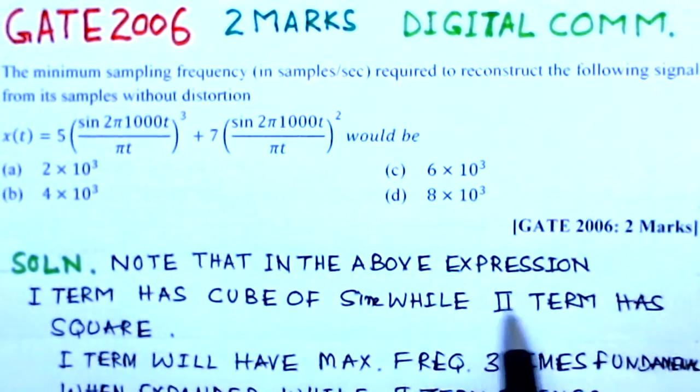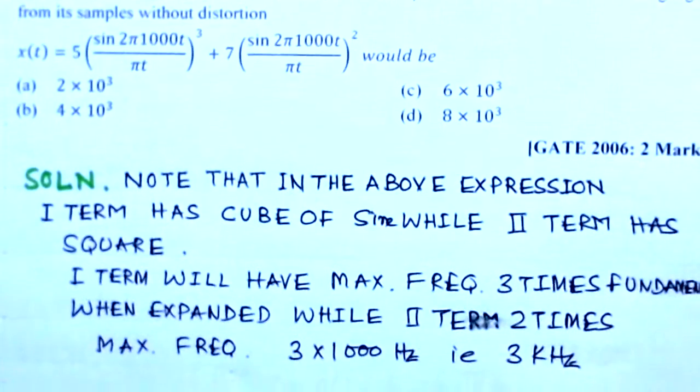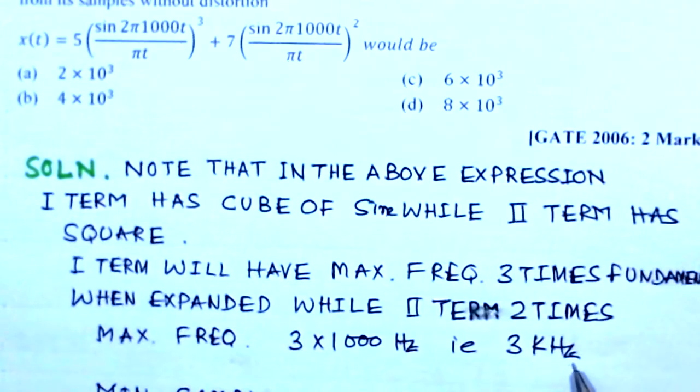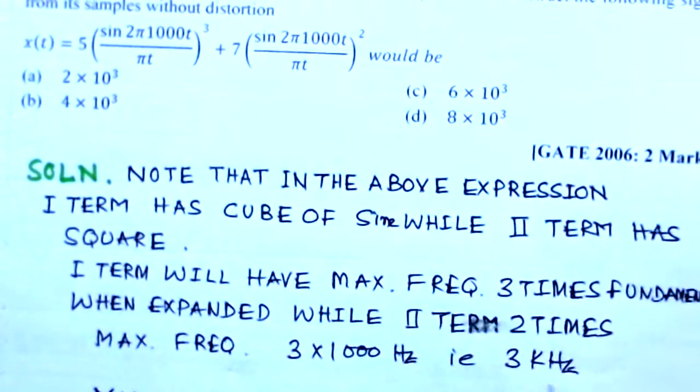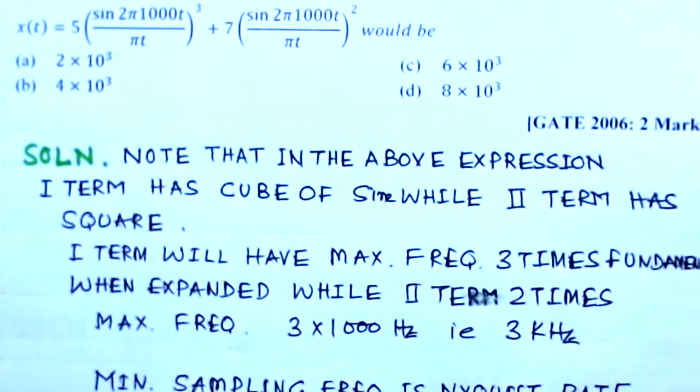Note that in the above expression, the first term has cube of the sin while the second term has square. The first term will have maximum frequency three times the fundamental when expanded, while the second term will have two times. So maximum frequency is three times 1000 hertz.